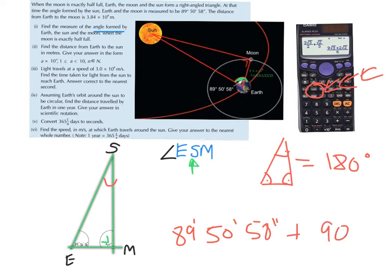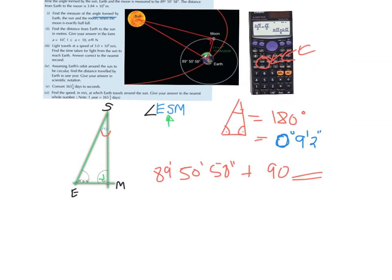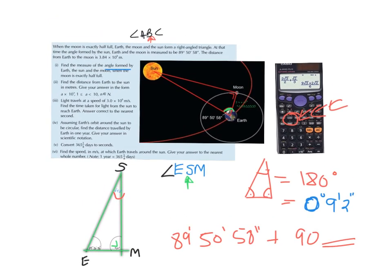Then we subtract from 180, and if you've done it correctly on your calculator you should get zero degrees, nine minutes, and two seconds. So that's a very very small angle, but nonetheless an angle.